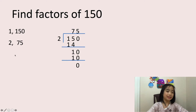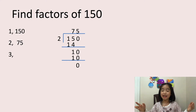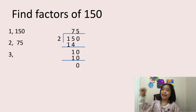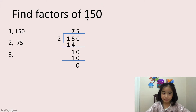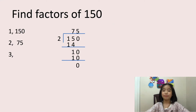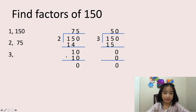Now let's move on. Is 3 a factor of 150? Well, the rule is if the sum of the digits is divisible by 3, the number is divisible by 3. So let's add 1 plus 5 plus 0 equals 6. So 6 is divisible by 3, so 150 is divisible by 3. Now let's verify this. Here is my long division, and 150 divided by 3 equals 50. So let's write 50 here.